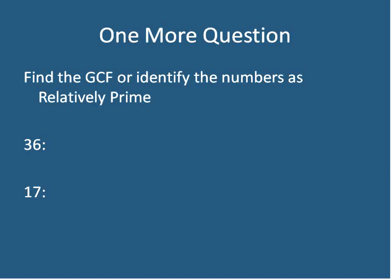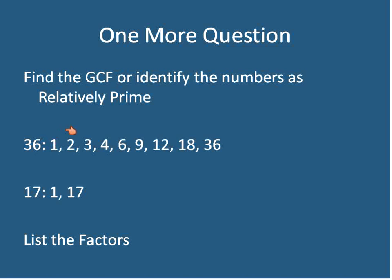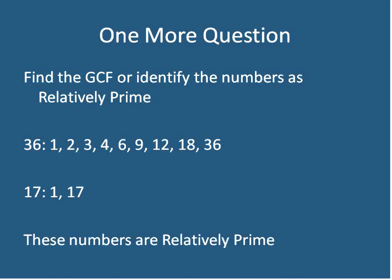Let's do one more: identifying the greatest common factor or identifying two numbers as relatively prime. We'll look at 36 and 17. Factors of 36 are 1, 2, 3, 4, 6, 9, 12, 18, and 36. The factors of 17 are 1 and 17 — 17 is, in fact, a prime number. These two numbers have nothing in common, so we say they are relatively prime. One is composite, one is prime, but that doesn't matter — what we're looking for is common factors between them. 36 and 17 are relatively prime, and that is the end of our lesson on greatest common factors and relatively prime numbers.